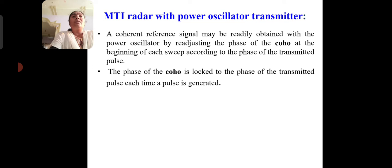The coherent reference signal may be readily obtained with the power oscillator by re-adjusting the phase of the COHO at the beginning of each sweep according to the phase of the transmitted pulse. The phase of the echo is locked to the phase of the transmitted pulse each time a pulse is generated.